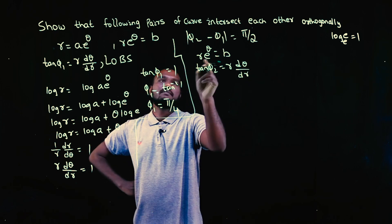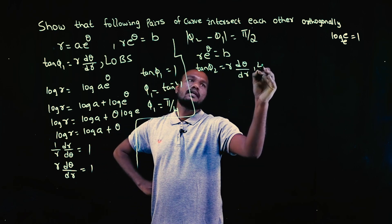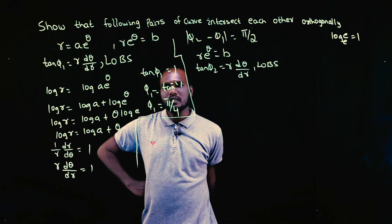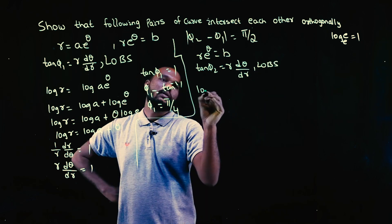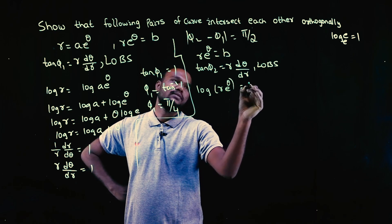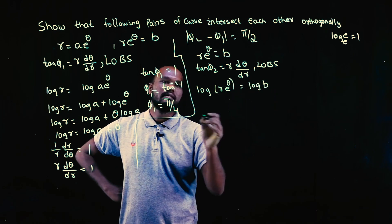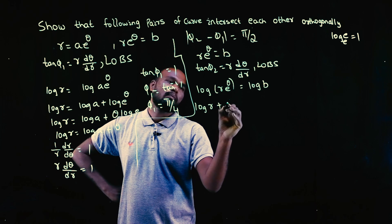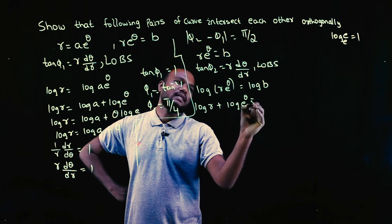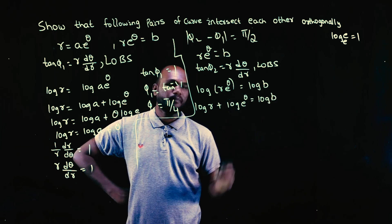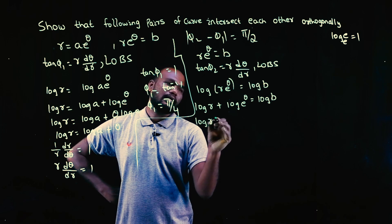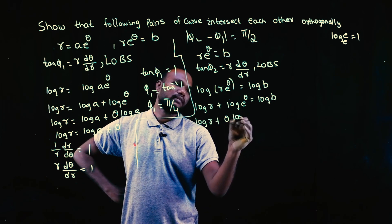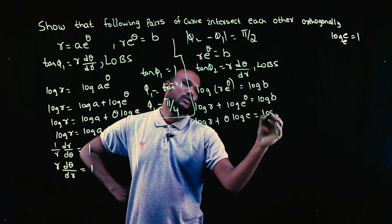Now r is directly given but look, look, look—it's complicated. So we are doing log on both sides. So log r e^theta is equal to log b. So log r plus log e^theta equal to log b. Next, log r plus theta will come in front, log e is equal to log b. Log e is how much? One. So log r plus theta is equal to log b.